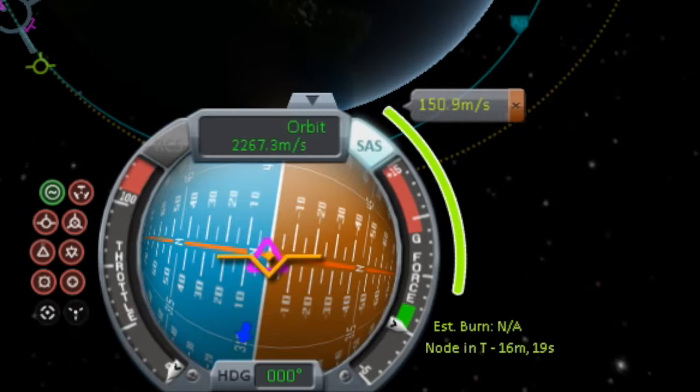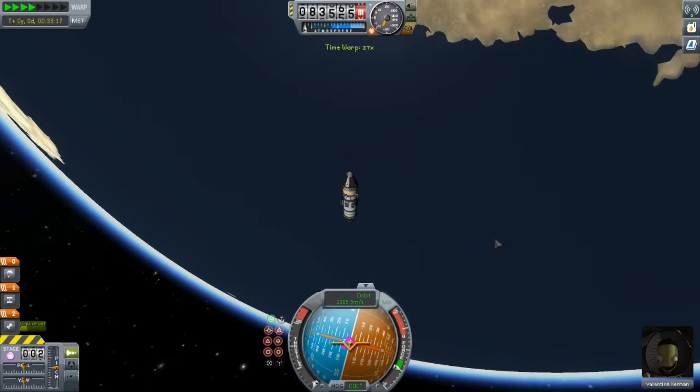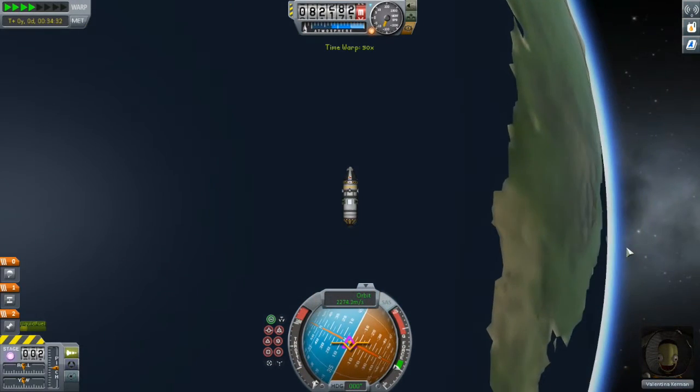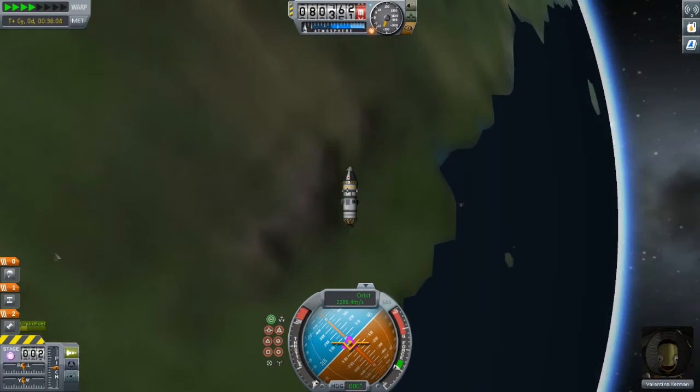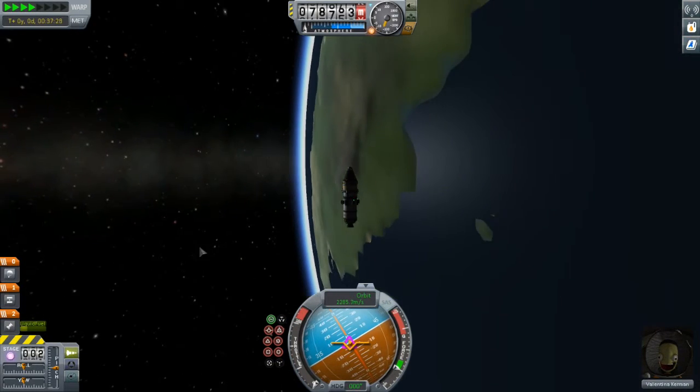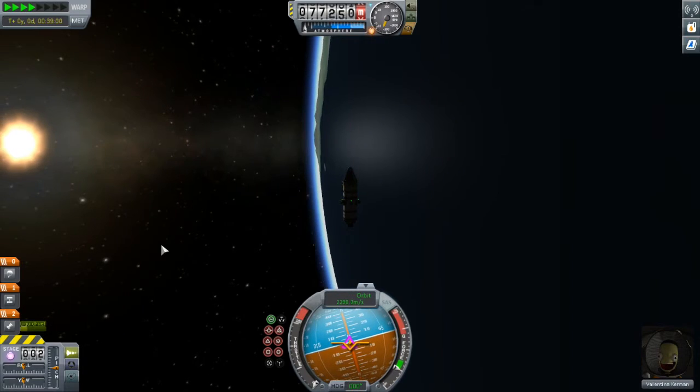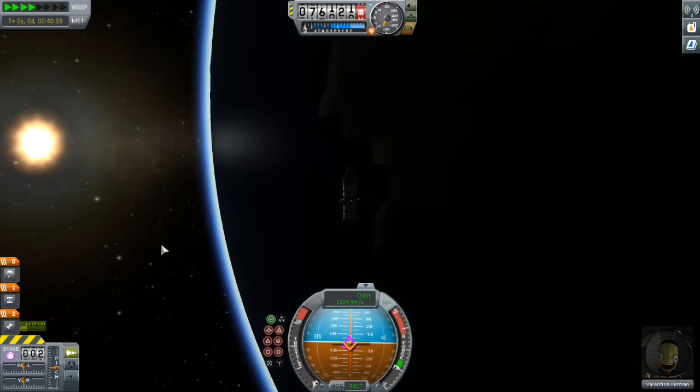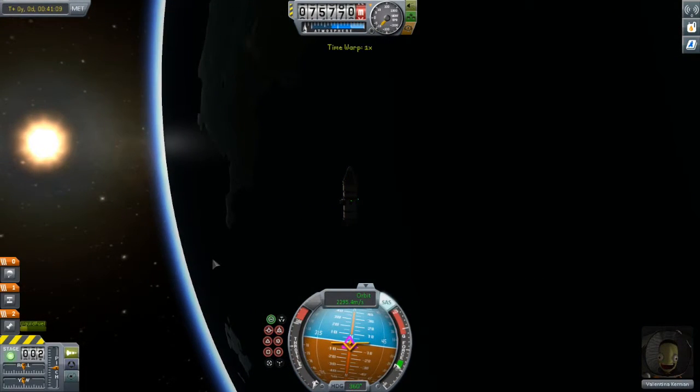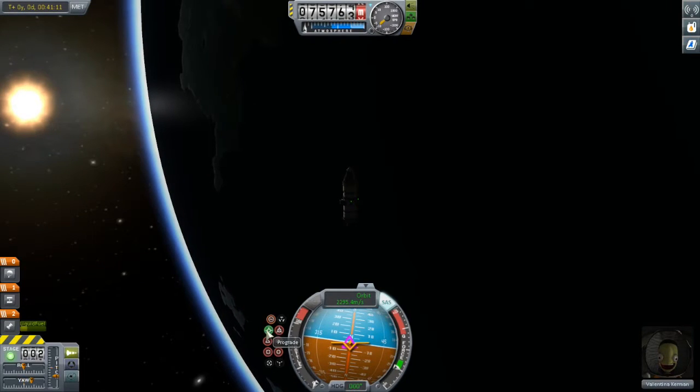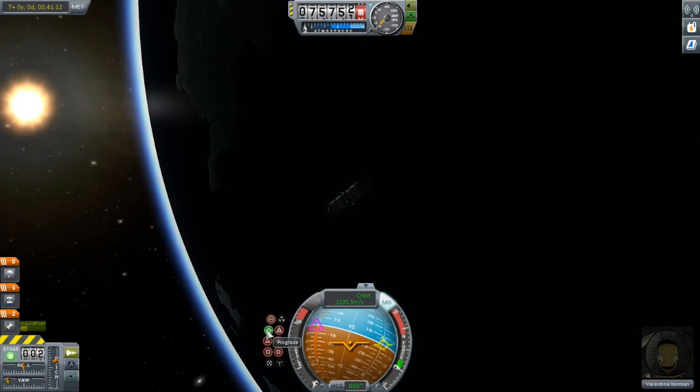151 meters per second. We call this number the delta V of the burn. It's how much velocity I need to add to my vessel in order to accomplish what it is that I want. And in the second part of this video, we're going to look at how we can calculate what that delta V requirement would be ahead of time. That would be a very useful number to know.